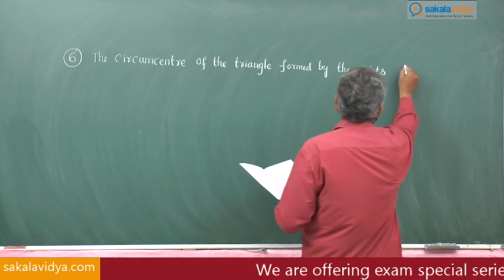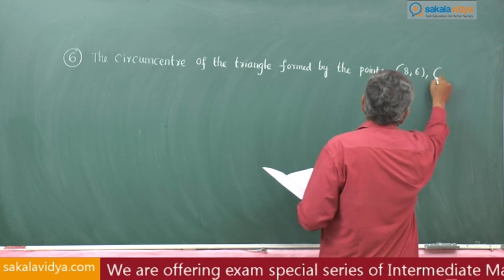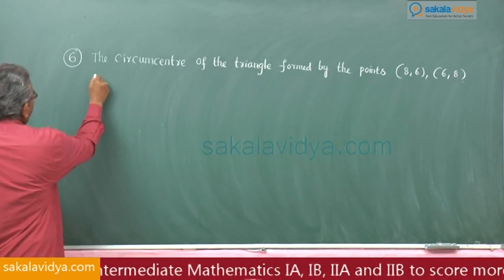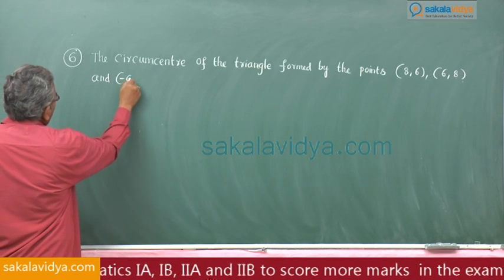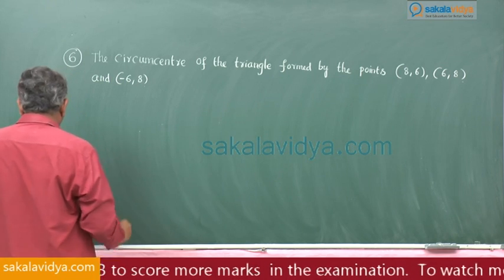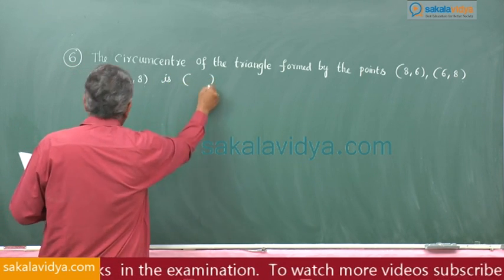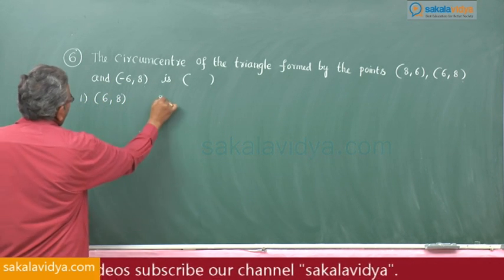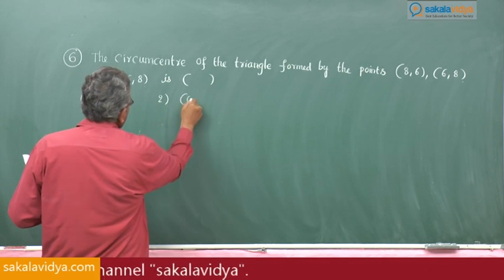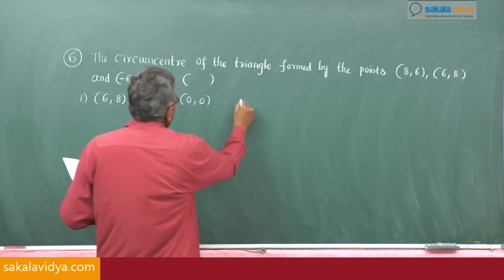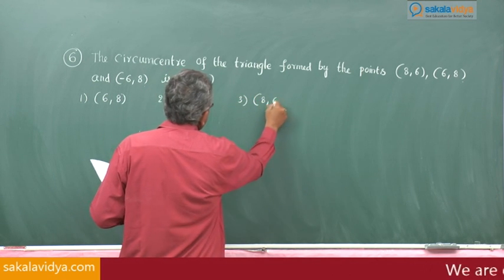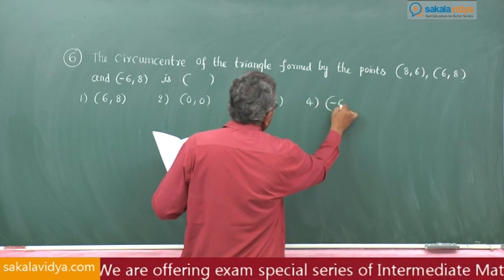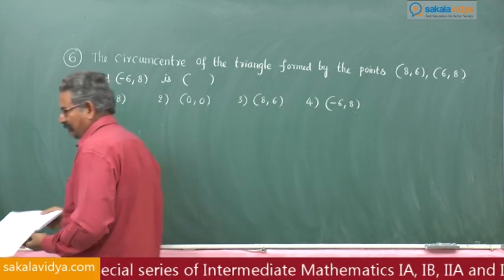formed by the points (8,6), (6,8), and (-6,8) is first option (6,8), second option (0,0), third option (8,6), fourth option (-6,8).